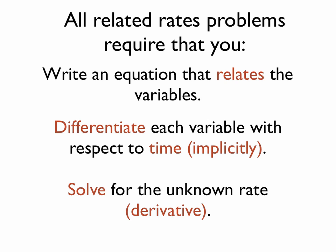For all related rate problems, it requires that you do a couple of things. First, you want to write an equation that relates the variables. After that, you want to differentiate each variable with respect to time, and so this is going to require implicit differentiation. Each variable gets differentiated with respect to time, or variable t. And then finally, you solve for the unknown rate, and that will be the derivative that you're solving for.